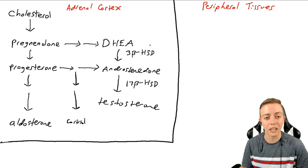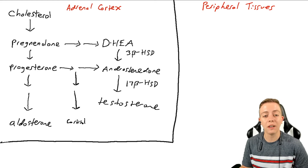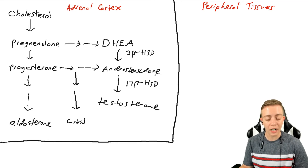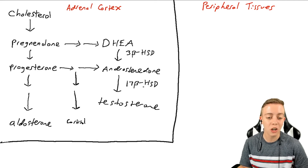DHEA is going to be converted to androstenedione by 3-beta-hydroxysteroid dehydrogenase, and then androstenedione will be converted by 17-beta-hydroxysteroid dehydrogenase to testosterone.